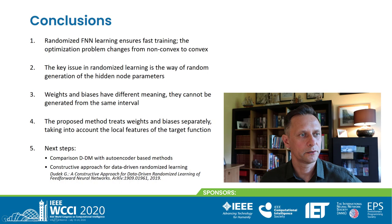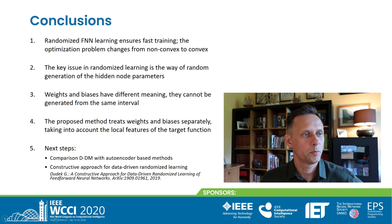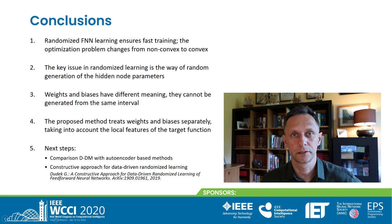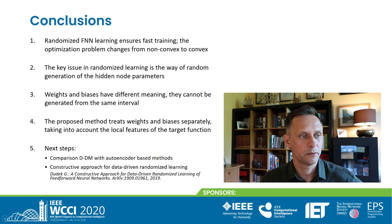In conclusion, randomized learning ensures fast training because the optimization problem changes from non-convex to convex. The key issue in randomized learning is the way hidden node parameters are generated. Because weights and biases have different meanings, they cannot be generated from the same interval. The proposed method treats weights and biases separately, taking into account the local features of the target function, which improves model performance in regression tasks. Next steps include comparison of the data-driven method with autoencoder-based methods, and a constructive approach for data-driven randomized learning, where the network is built iteratively by adding new hidden nodes generated according to the data-driven method — accepted or not depending on whether the error reduction exceeds a threshold. See details in this work.